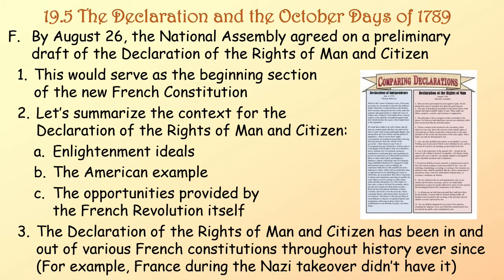By August the 26th, the National Assembly agreed on a preliminary draft of the Declaration of the Rights of Man and Citizen. This would serve as the beginning section of the new French Constitution. The context for this Declaration included Enlightenment ideals, the American example, and opportunities provided by the French Revolution itself. The Declaration has been in and out of various French constitutions throughout history ever since — for example, France did not have it during the Nazi takeover.